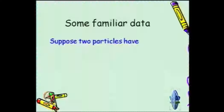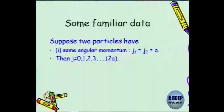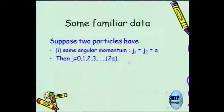Some familiar data to corroborate what was said formally: if you take both particles to have the same angular momentum, like two spin-half particles, call the angular momentum of particle 1 and particle 2 to be a. The total j maximum will be 2a, which is j1 plus j2. The minimum will be j1 minus j2, which is 0, and it goes in steps of 1. This is the range of the coupled basis angular momentum — it is not a fixed value, it goes from 0 to 2a.